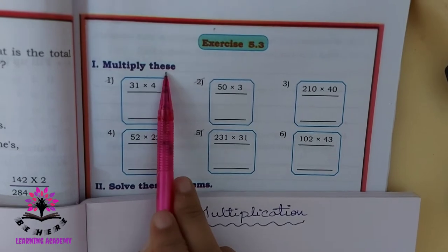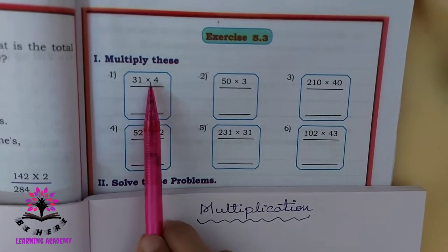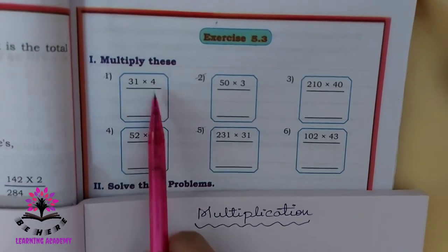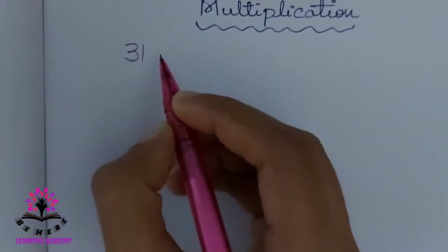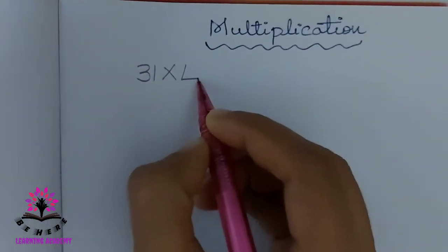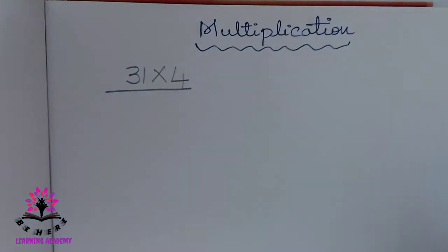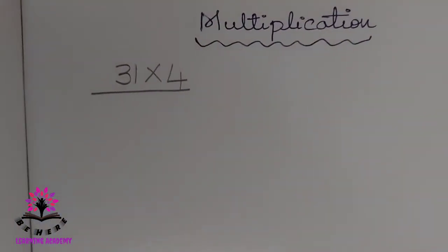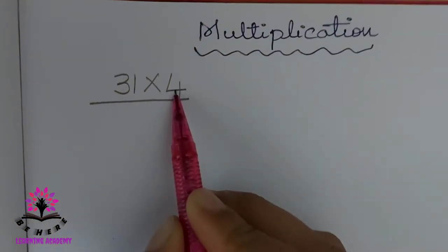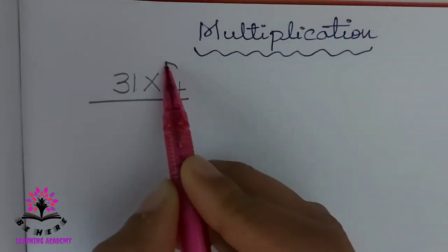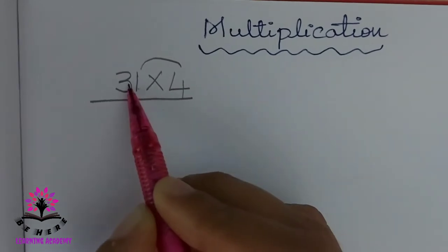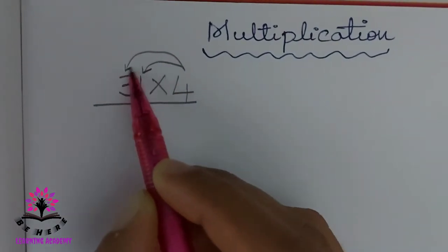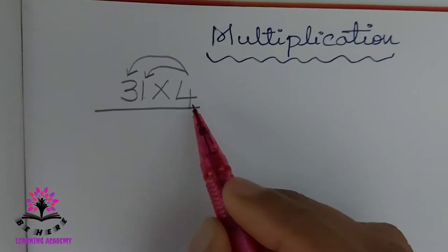Multiply these: 31 into 4. How to solve this problem? First, what you have to do is: 4 you have to multiply by 1 and write the answer. Then 4 multiply by 3, write the answer. Let us begin.